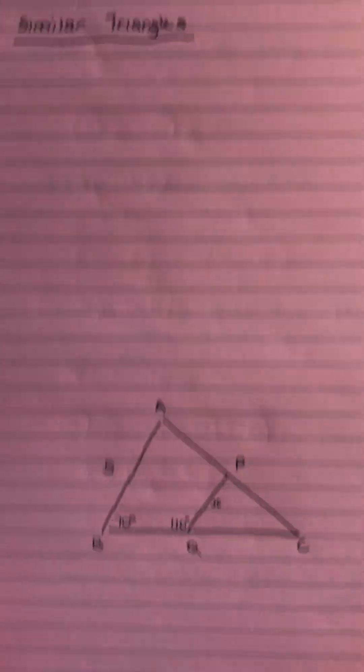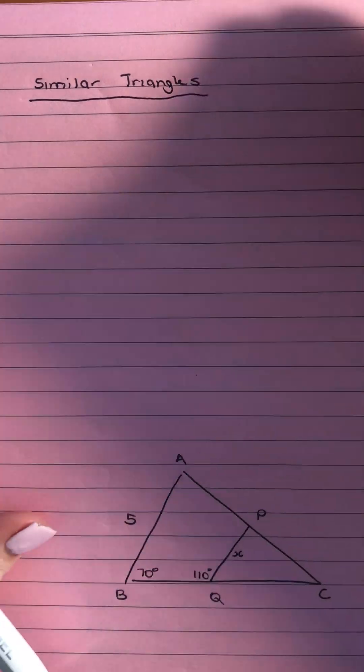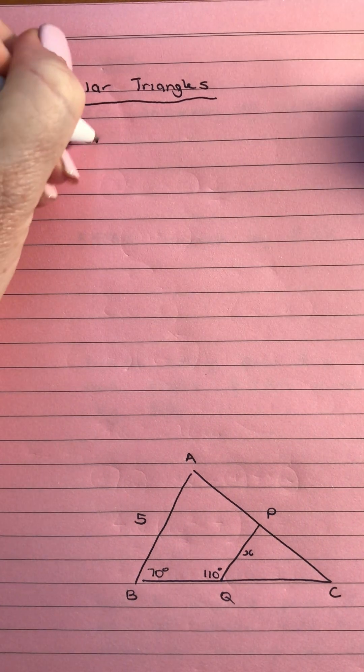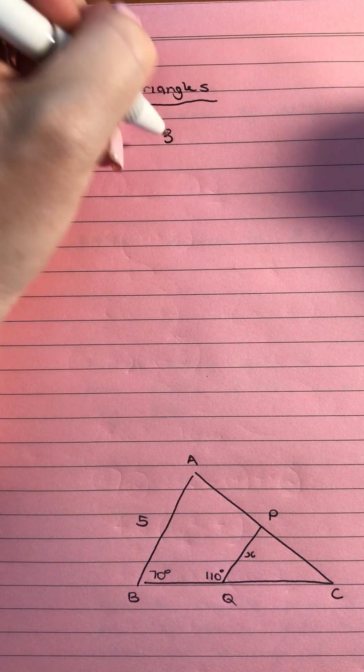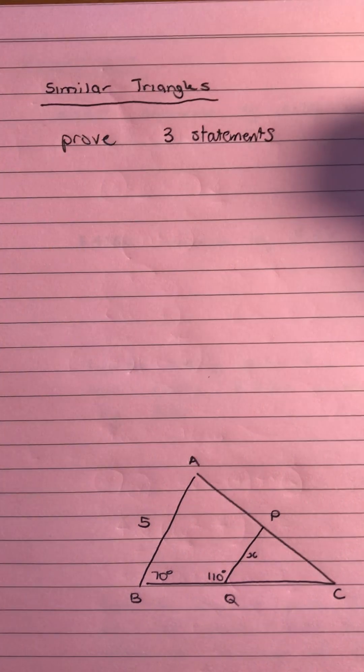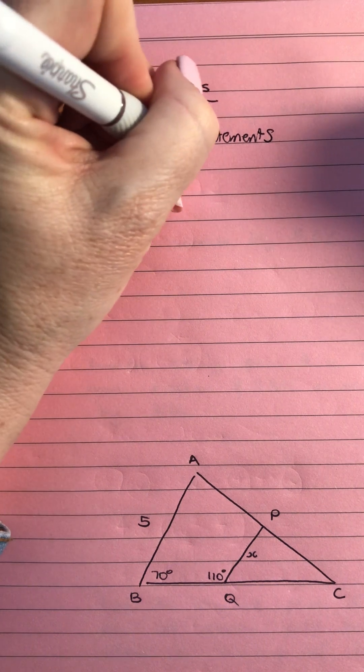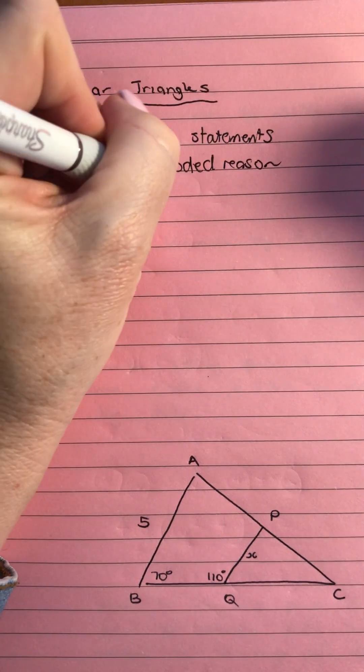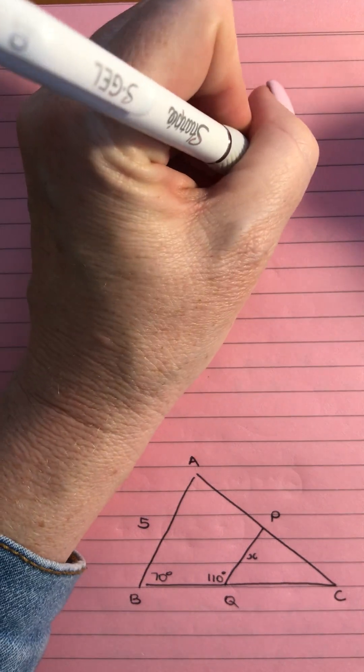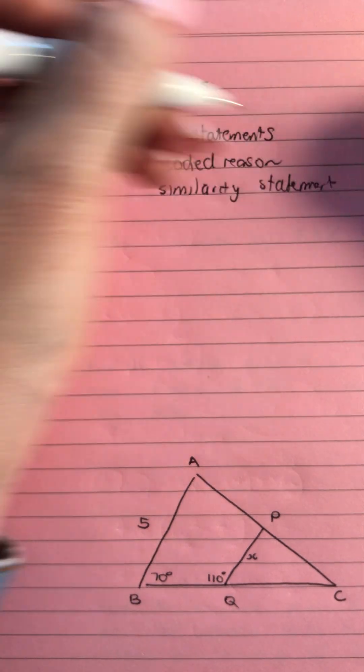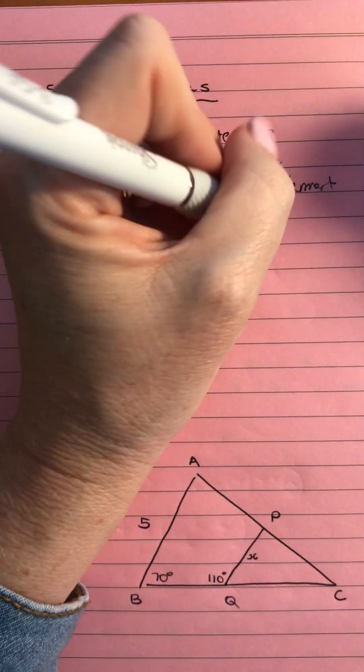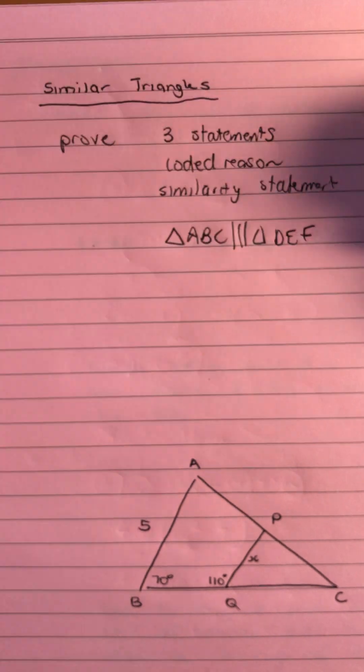Then we have our similar triangles. Now the things we need to be able to do with similar triangles is to prove our similarity. When we're proving similarity we need 3 statements that we can see. We need a coded reason and we need a similarity statement.